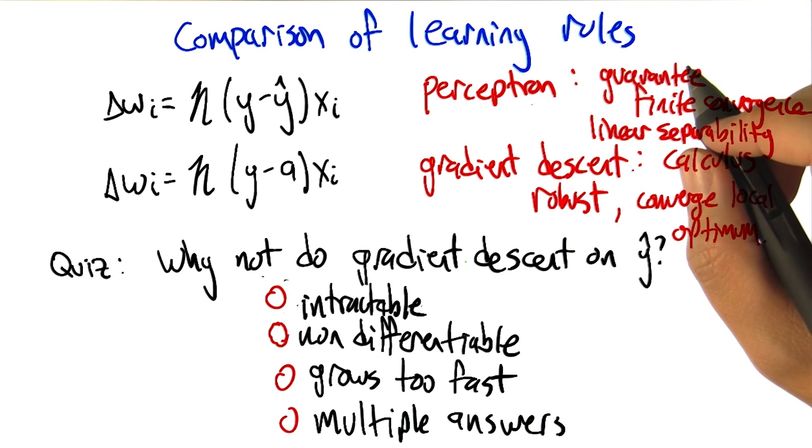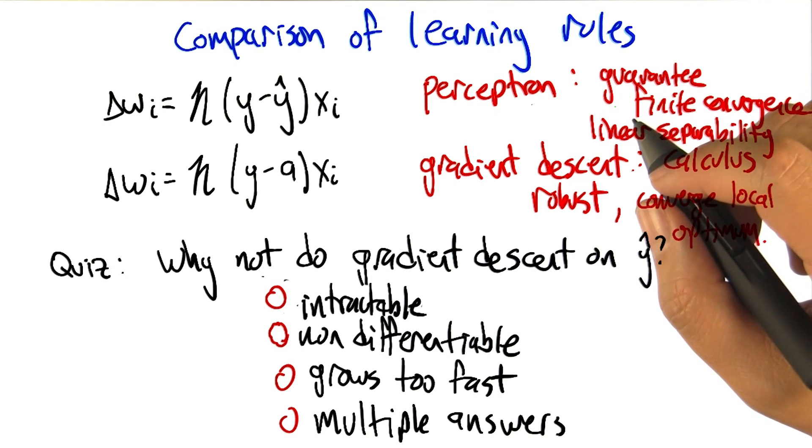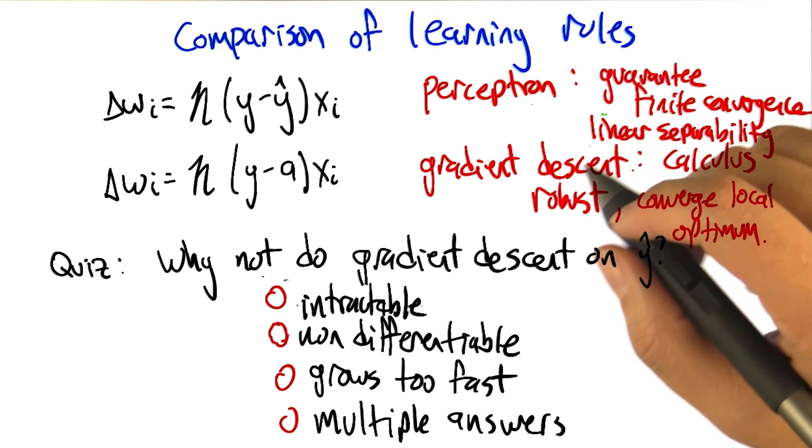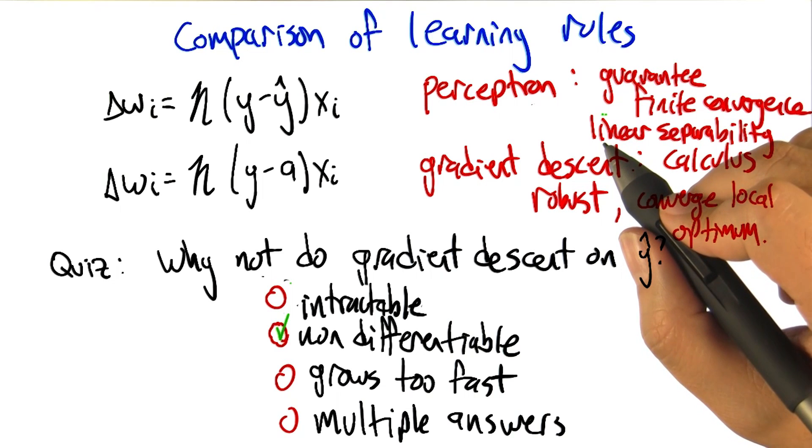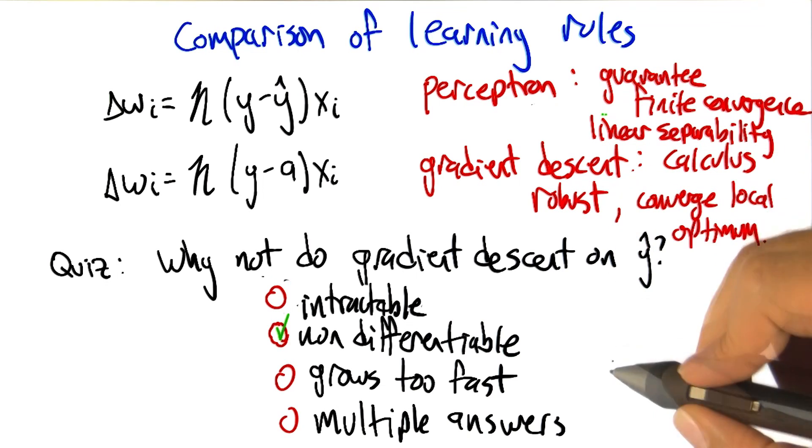So, why don't we do gradient descent on y hat? Well, there could be many reasons, but the main reason is it's not differentiable. It's a discontinuous function. There's no way to take a derivative at the point where it's discontinuous.